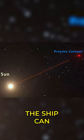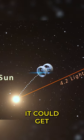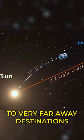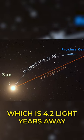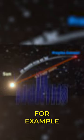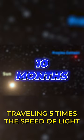Since the ship can theoretically move many times the speed of light, it could get to very faraway destinations like Proxima Centauri, which is 4.2 light-years away, for example, in 10 months, traveling five times the speed of light.